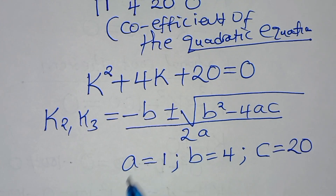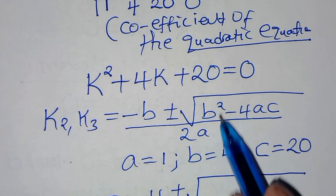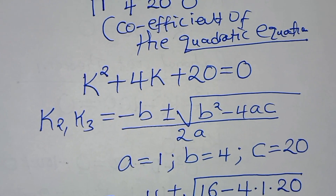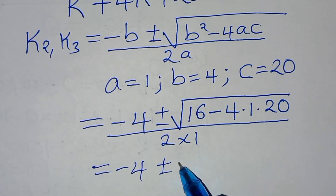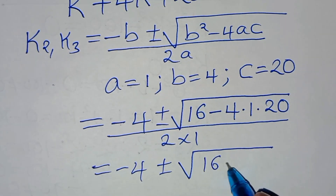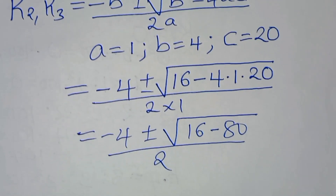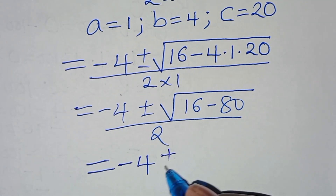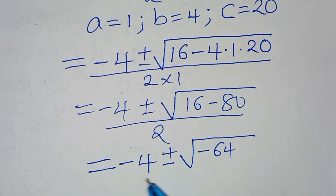Substituting the values: k equals negative 4 plus or minus the square root of 4² minus 4 times 1 times 20, divided by 2 times 1. This gives negative 4 plus or minus the square root of 16 minus 80, all divided by 2, which simplifies to negative 4 plus or minus the square root of negative 64, divided by 2.